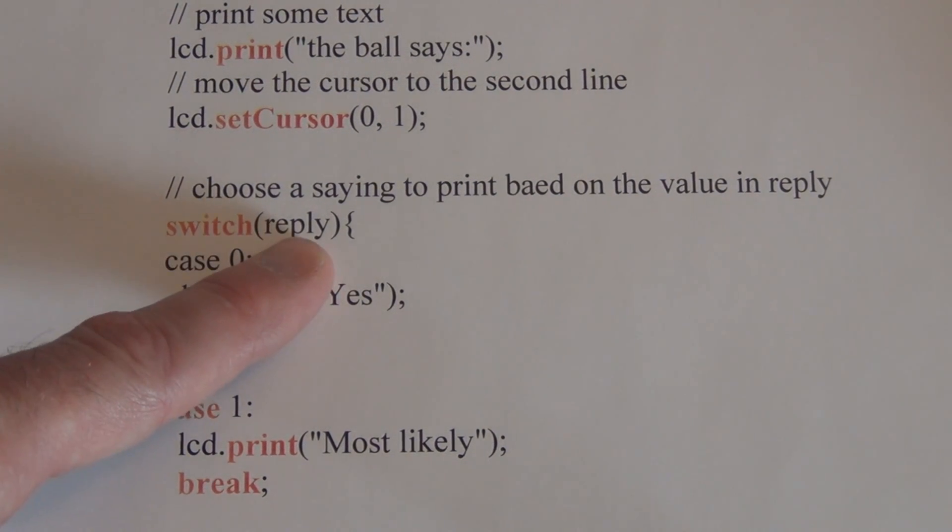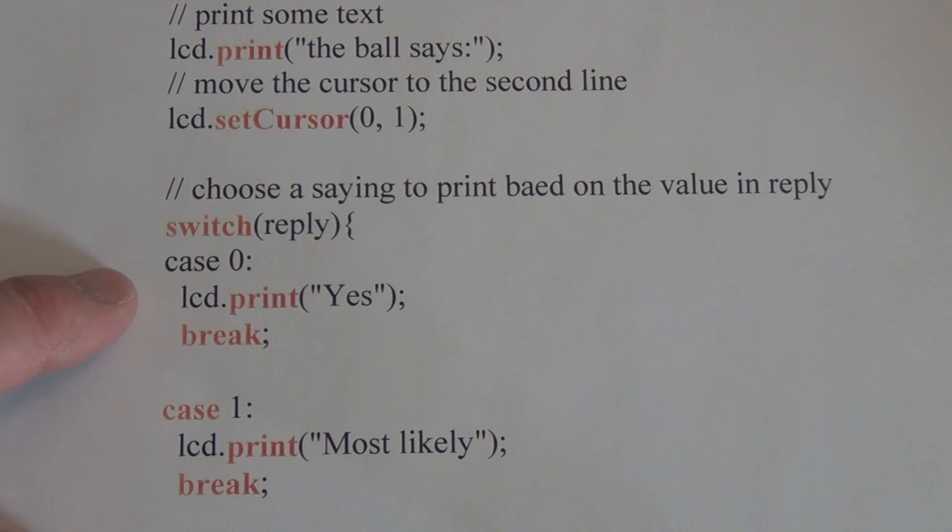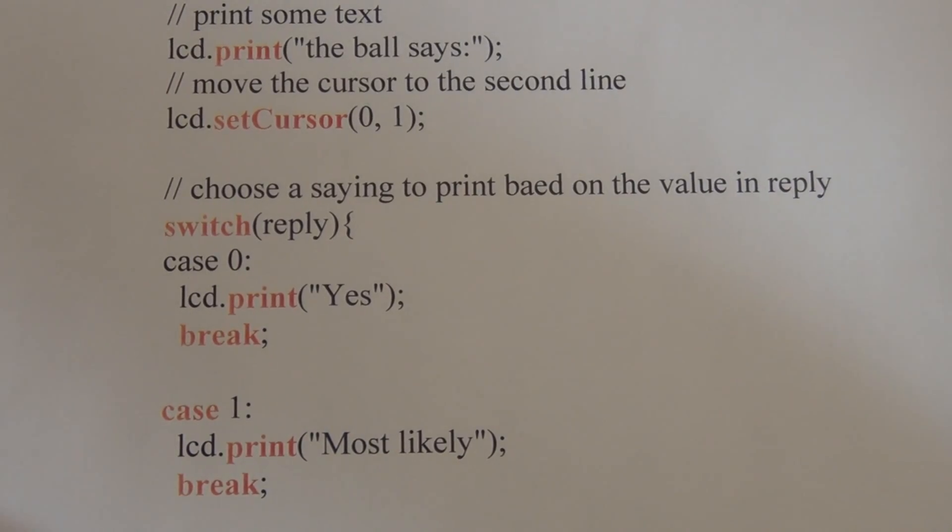So we have this random number that gets generated and stored in reply from the random function. And whatever value that returns, we have either case zero, case one, two, three, four, five, six, or seven. So if a zero is returned to switch, it'll print out lcd.print yes. So after each print statement, we have this break command and it tells the Arduino where the end of the case is. And when it hits break, it skips to the end of the switch statement. So each one of these individual cases has a break command that will skip down to the end of the switch statement.